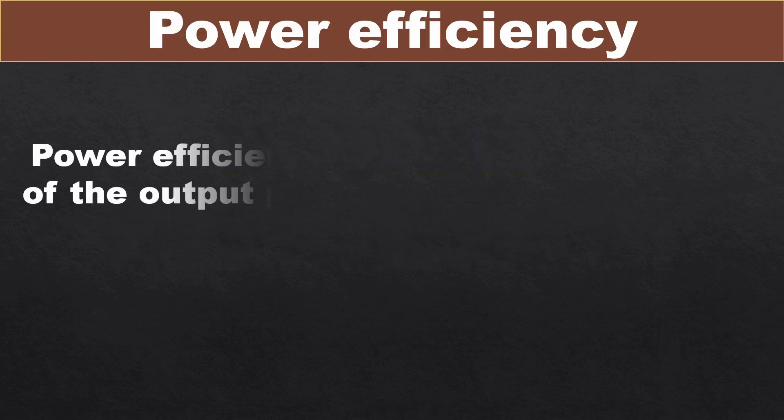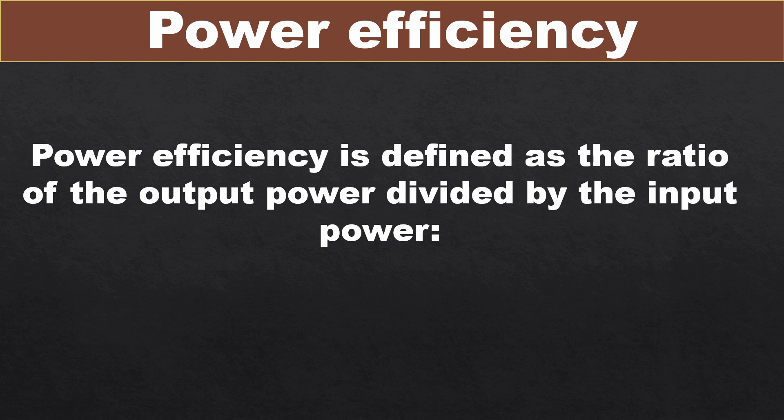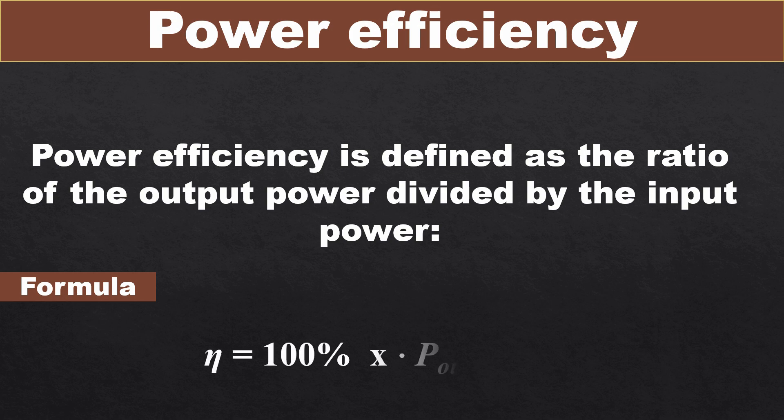Power efficiency is defined as the ratio of the output power divided by the input power. The formula for power efficiency is efficiency equals 100% multiplied by output power divided by input power.